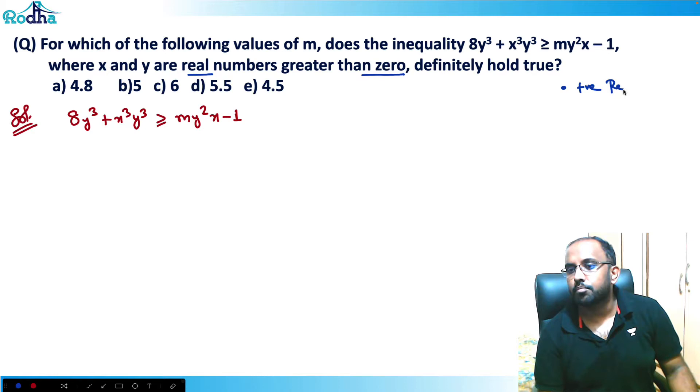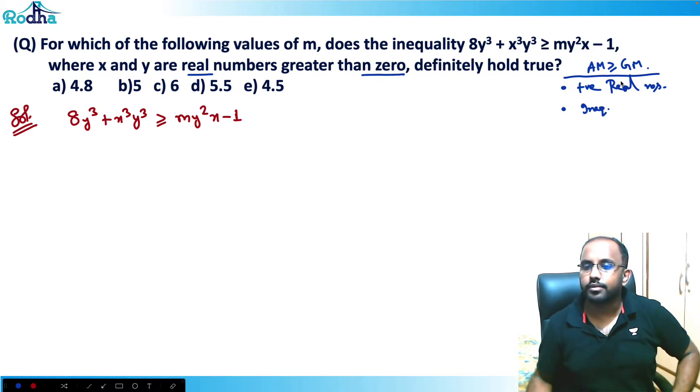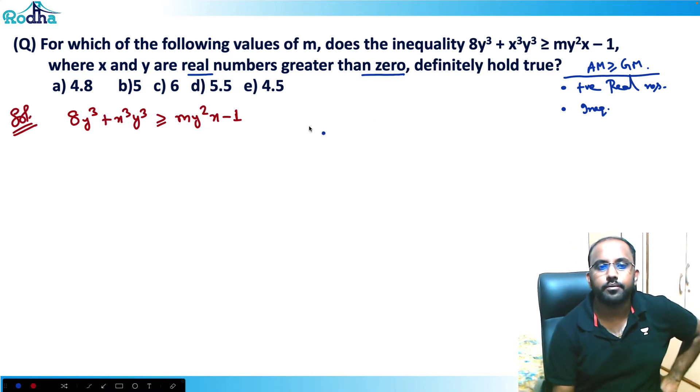If we have positive real numbers and inequality signs, that means I need to maximize minimize. So always we need to go for AM-GM. These are the hints for AM-GM, right? So basically first try to solve this equation a bit, then we'll try to apply AM-GM. So I need an equation in terms of m.